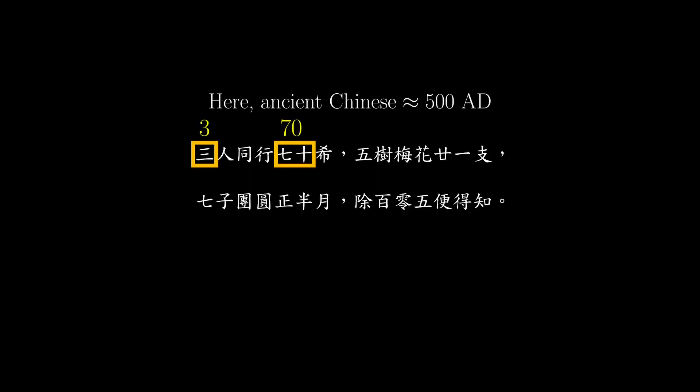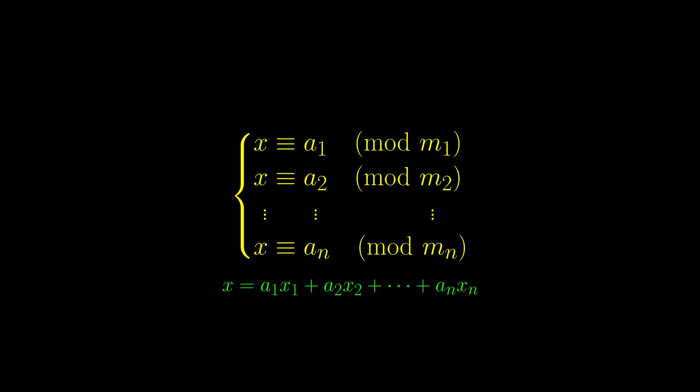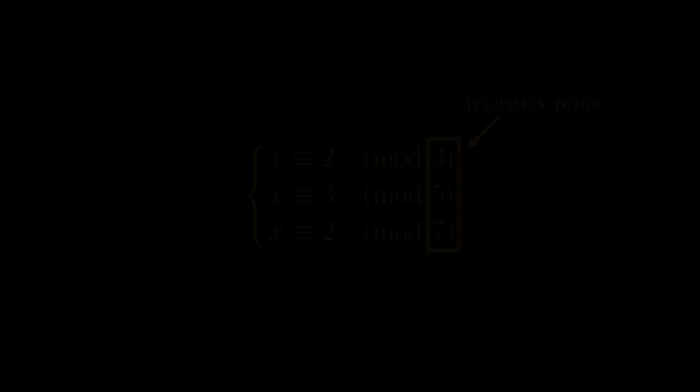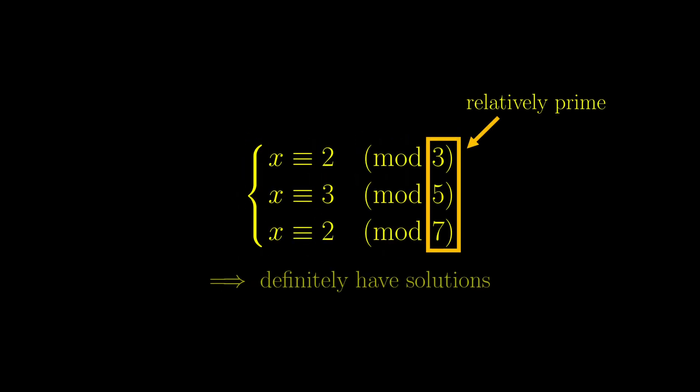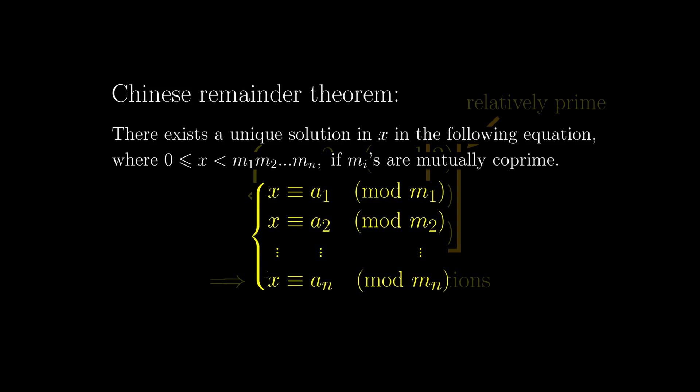This entire process was known since the ancient Chinese. They even had poems about this process. This poem basically states that we multiply the remainder with divisor 3 by 70, that with divisor 5 by 21, and that with divisor 7 by 15, then subtract 105 until you get the answer. It is important to note that we would definitely have solutions using this process if all the m's are mutually relatively prime. But if not, it is not guaranteed that this would have any solutions at all. Since 3, 5, and 7 are mutually co-prime, we definitely have solutions for the original Chinese problem. This small caveat is known as the Chinese remainder theorem.